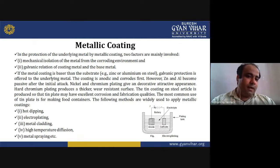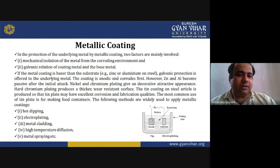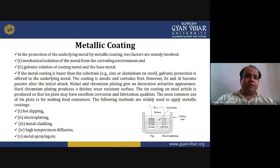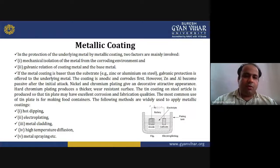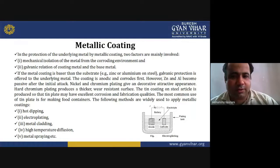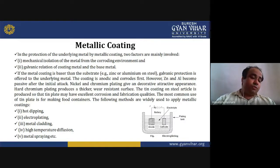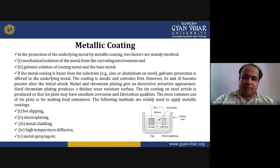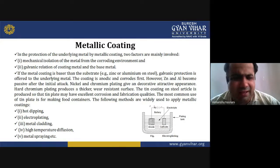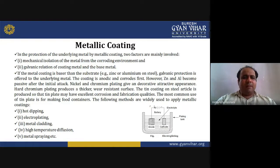Hard chromium plating produces an attractive decorative appearance. Tin coating on steel articles is produced so that tin plate may have excellent corrosion resistance and fabrication quality. The most common use of tin plate is for making food containers. Methods widely used to apply metallic coatings include hot dipping, electroplating, metal cladding, high-temperature diffusion, and metal spraying.